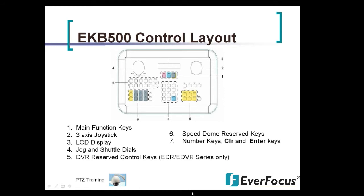Two is your three-axis joystick. Three is your LCD display screen. Four is the jog and shuttle dial for DVR control. Five are your DVR reserved control keys — that's for the EDR and EDVR series.